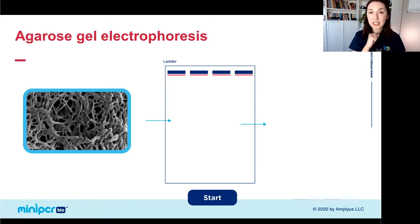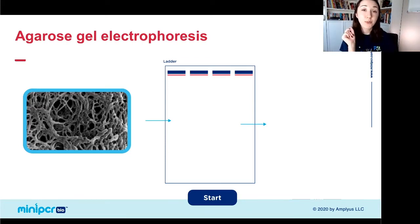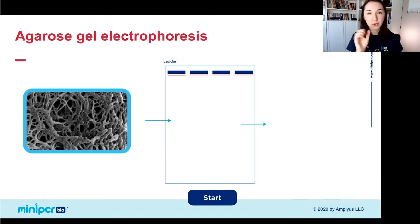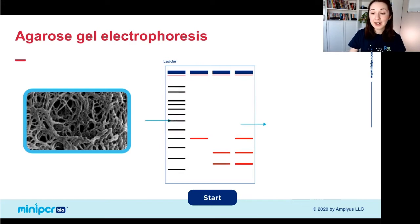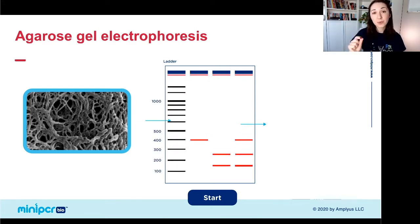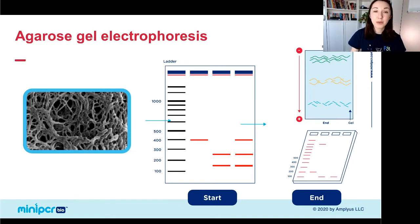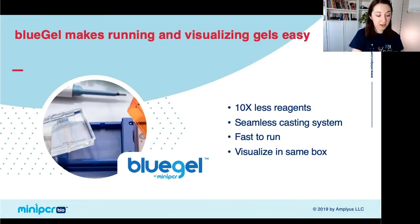If you teach agarose gel electrophoresis in your classroom, you might be familiar with the fact that it's an important tool used to separate and visualize DNA fragments. Agarose is a long polysaccharide molecule that forms a thick gel — like jello — with many pores of different sizes. When you add your DNA to one side of that gel and apply an electric current, your DNA sorts out by size: small pieces zip quickly through the gel, while long pieces move much more slowly.